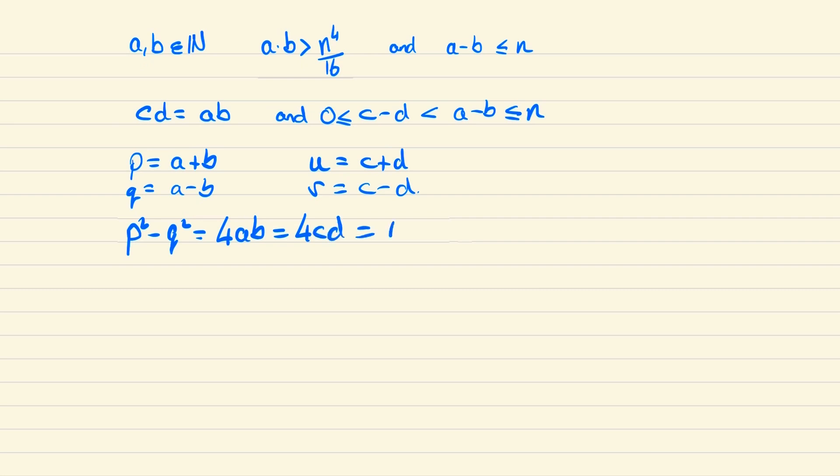This will also be u squared minus v squared and by the fact that ab is greater than n to the 4 over 16 we know that this must be greater than n to the 4 over 4.